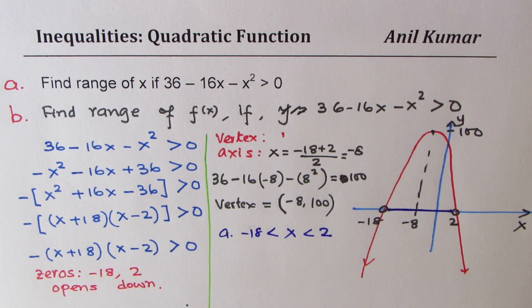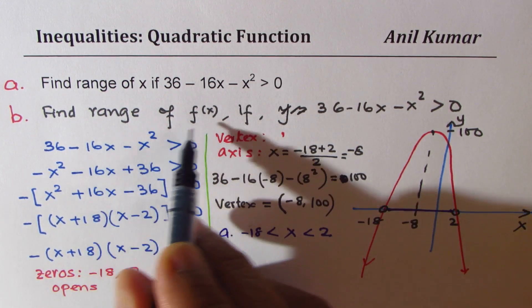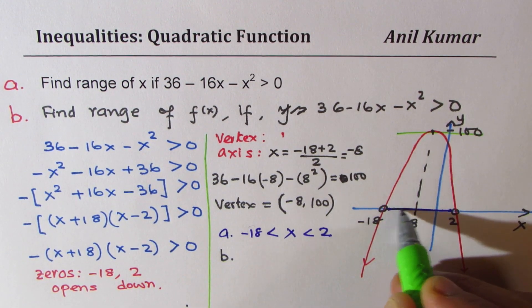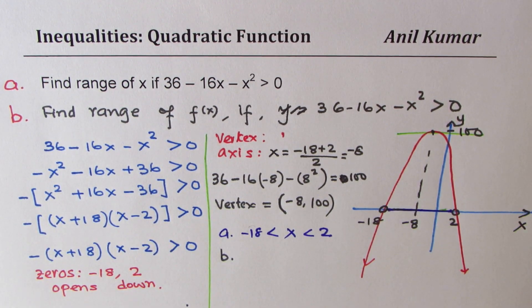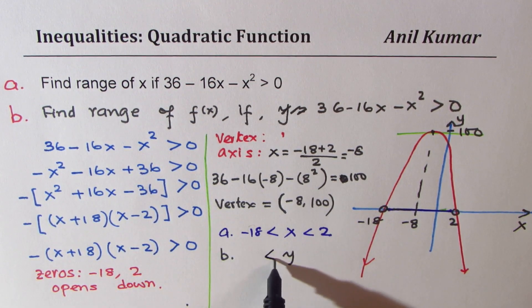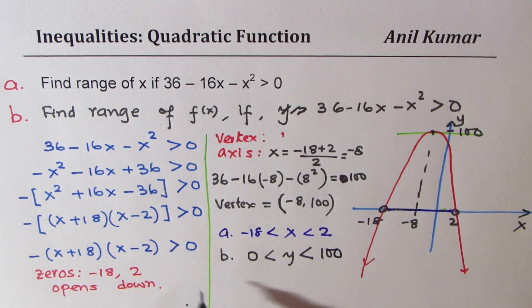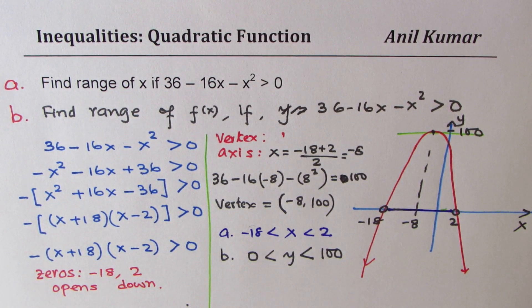And part B is to find range of the function. So the range of the function is from here to here. Range of the function is the y value, which is greater than 0 and is less than 100. So that becomes the solution of part B.